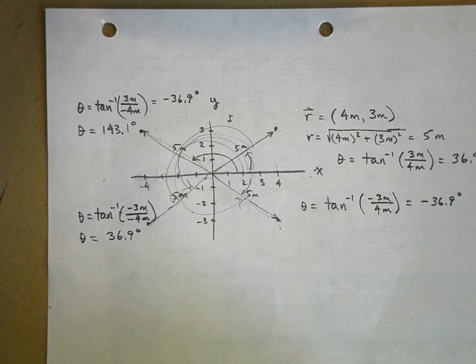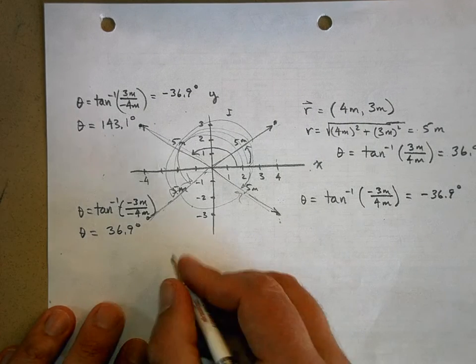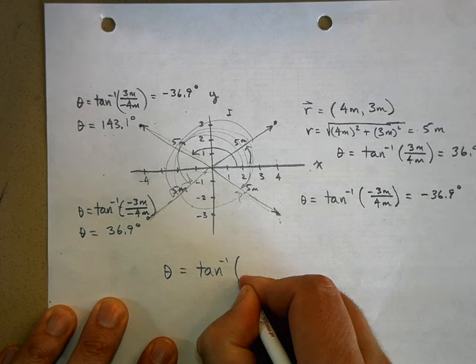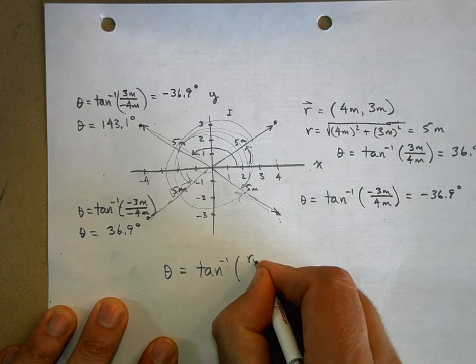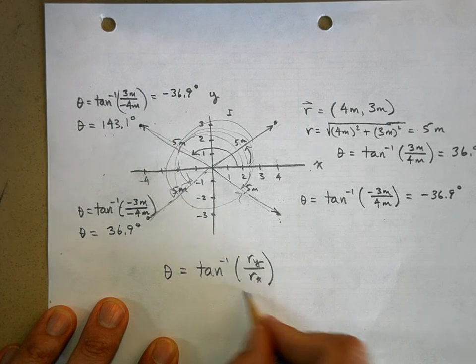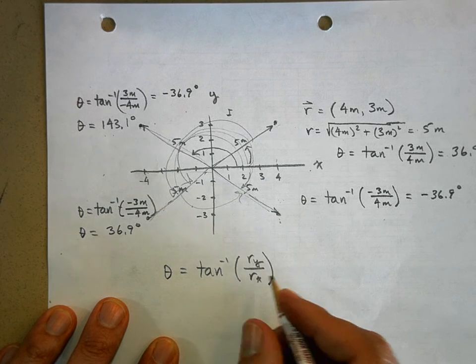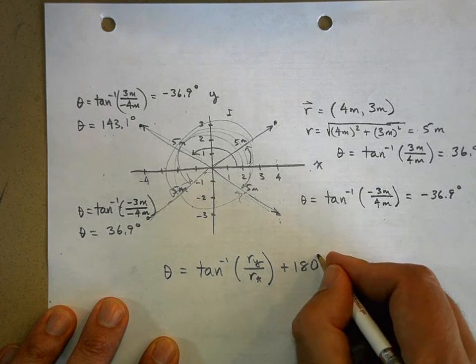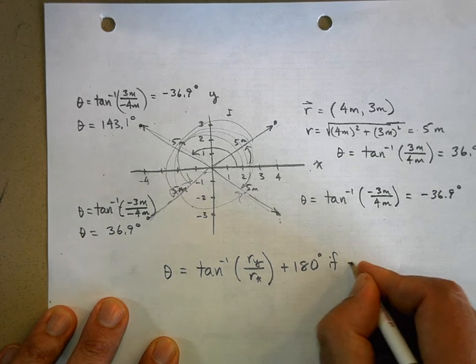So, that's why we say this. To find the angle using inverse tangent, it's the y component divided by the x component. And then you look at your x component. If it's negative, you add 180 degrees if negative rx.